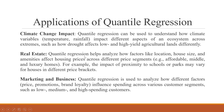Real estate: quantile regression helps analyze how factors like location, house size, and amenities affect housing prices across different price segments — affordable, middle, and luxury homes. For example, the impact of proximity to schools or parks may vary for houses in different price brackets. Marketing and business: quantile regression is used to analyze how factors such as price, promotions, and brand loyalty influence spending across various customer segments — low, medium, and high spending customers.